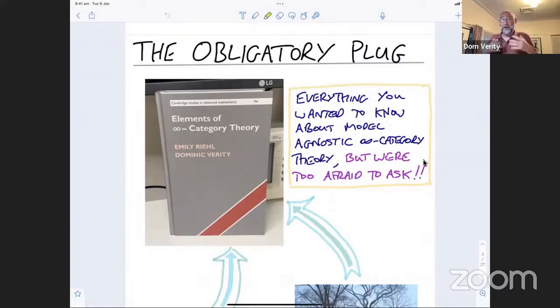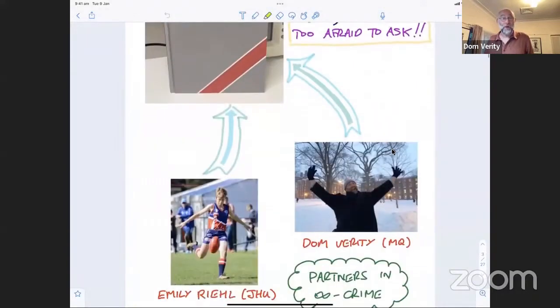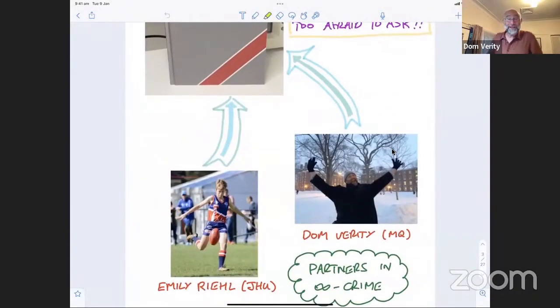The name of our book is Elements of Infinity Category Theory, and it does indeed talk about model agnostic infinity category theory. In other words, infinity category theory that isn't grounded in a single concrete model of what an infinity category is. The authors of this book are myself, Dominic Verity, and Emily Riehl.